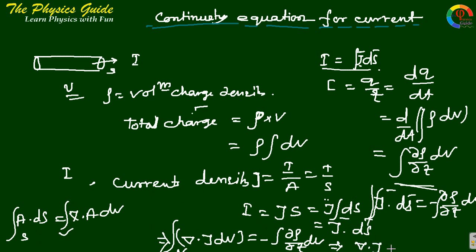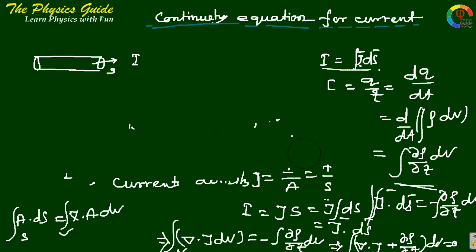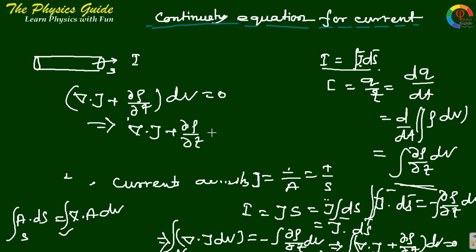This gives ∫(∇·J + ∂ρ/∂t) dV equals zero. From the last line, we get ∇·J + ∂ρ/∂t equals 0. This is our continuity equation.